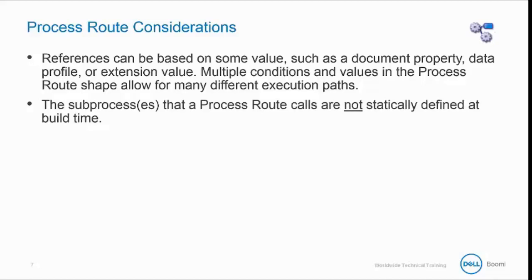The subprocesses that a process route calls are not statically defined at build time. The subprocesses and the process route itself can all be changed and deployed independently of the parent process. You can even build a new subprocess, update the process route to call that subprocess, and deploy the new subprocess and process route component without ever touching the parent process.